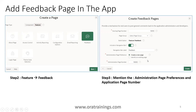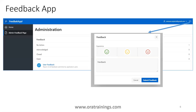Click on create and you should be able to see the feedback page in your application. Once you run your application, you'll see an icon like this. Click on the icon and it shows a pop-up. Here you just need to mention the feedback — good, bad, worst — and submit the feedback.